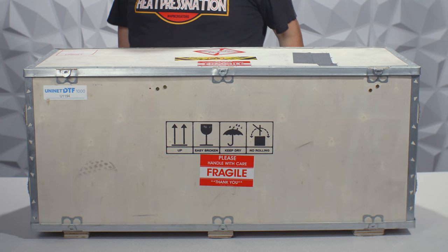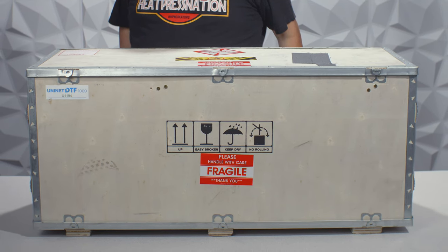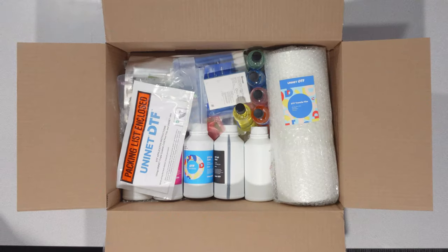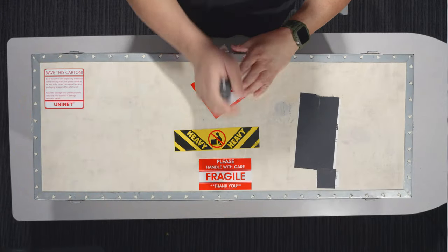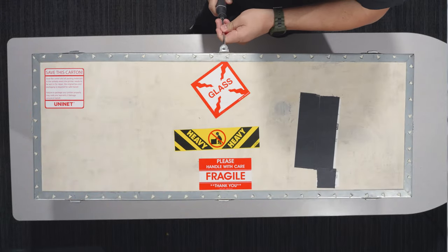Your UniNet DTF-1000 is going to come in a wooden crate. The inks and supply items will arrive in a separate box. You're going to need a flathead screwdriver and a Phillips head screw gun to unbox the printer.